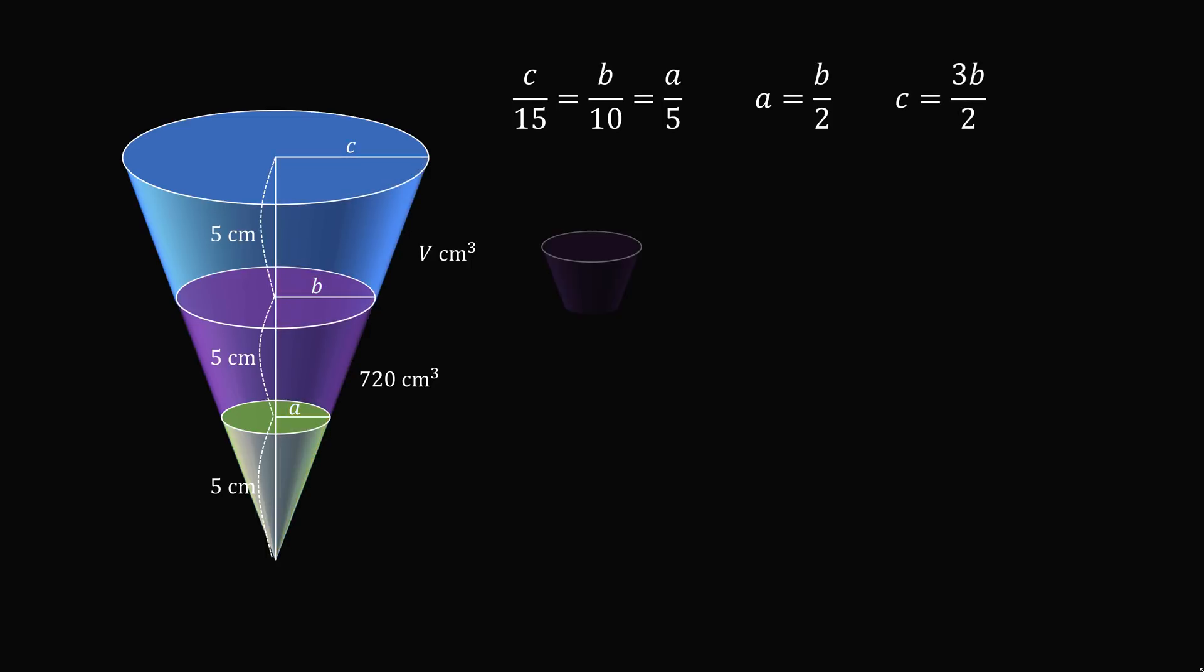Now, the volume of this truncated cone will be equal to the volume of the larger cone minus the volume of the smaller cone. The volume of a cone is pi R squared times H all over 3. So we can calculate the volume of each of these cones.